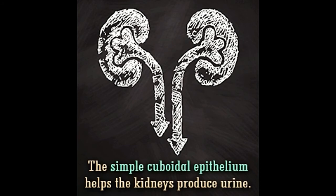The main function of a simple cuboidal epithelium is the production or absorption of substances. But that's not all. Buzzel tells you more about this tissue, such as its definition, location, structure, and other characteristics.